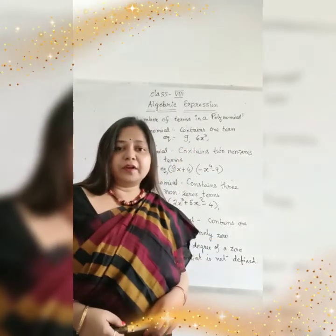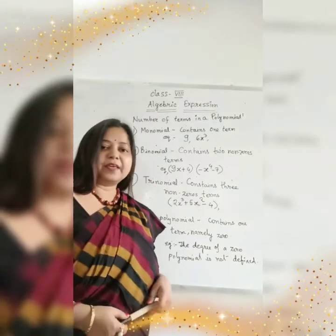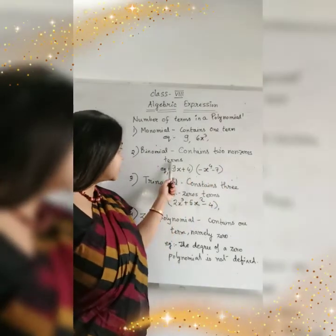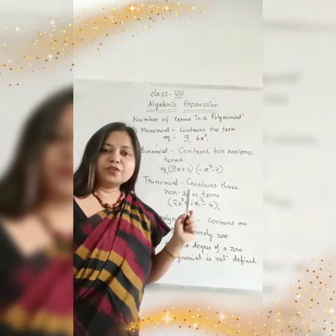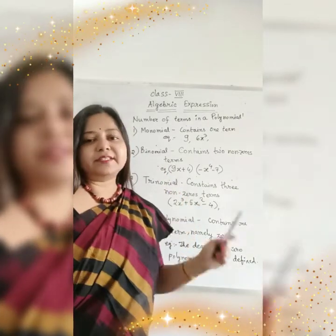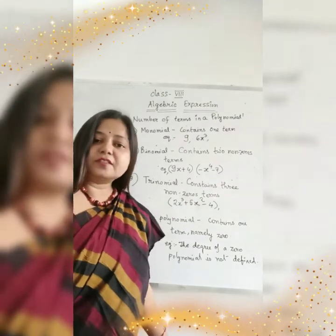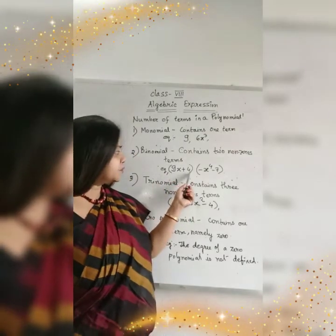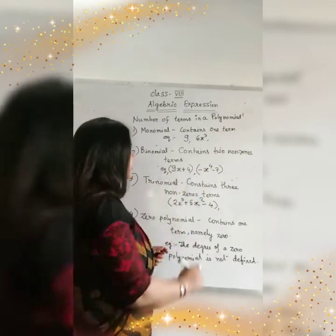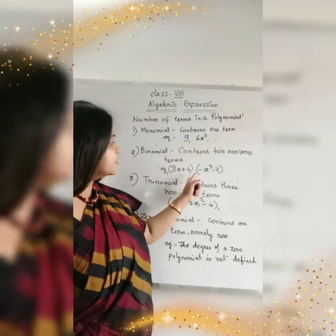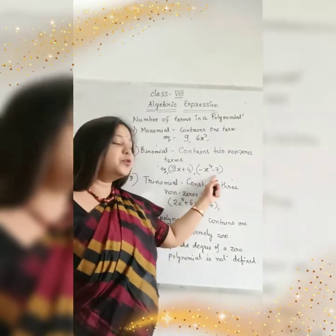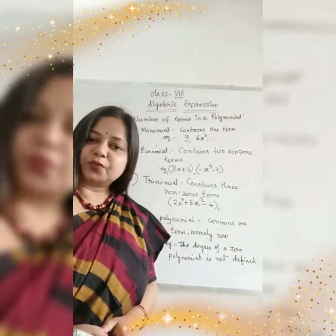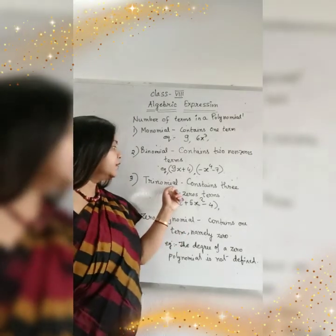That means a constant term like 9 is also an example of monomial. Our next topic is binomial. Binomial contains 2 non-zero terms — 'bi' means 2. So when the Algebraic Expression contains 2 terms connected with either plus or minus, that is called binomial.